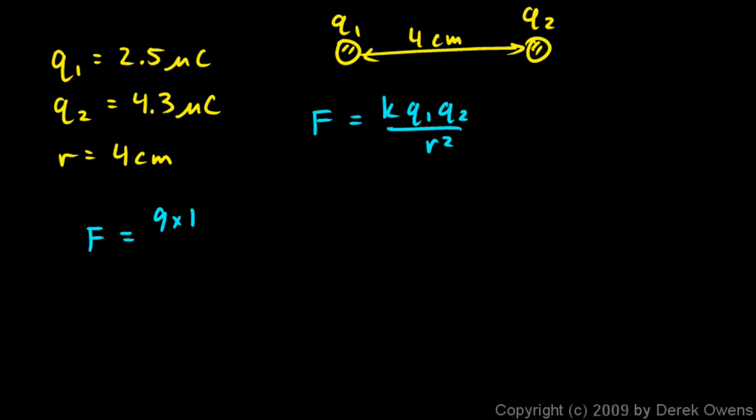K is nine times ten to the ninth Newton meter squared per Coulomb squared. Q1 is 2.5 microcoulombs, that's 2.5 times ten to the negative sixth Coulombs, because that's what micro means—micro means ten to the negative sixth. And the same thing on Q2, it's 4.3 times ten to the negative sixth Coulombs.